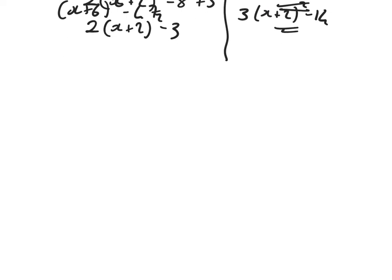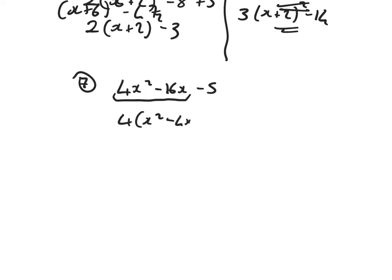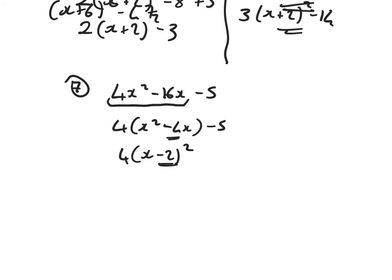Example 7: 4x squared minus 16x minus 5. Take out a numerical common factor of 4: bracket x squared minus 4x, close the bracket, minus 5. Half the minus 4 down to a minus 2, create a squared bracket with a 4 at the front. Minus 2 squared is 4, multiply that by 4 is 16 — get rid of 16 and take away 5. That's 4 bracket x minus 2 all squared minus 21.